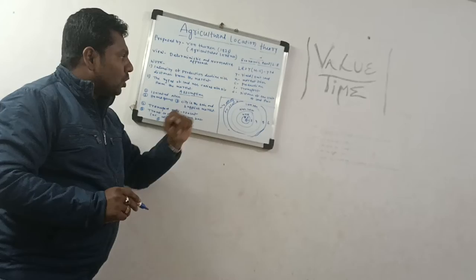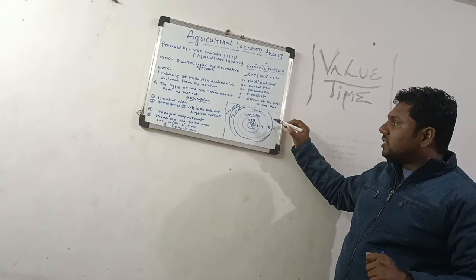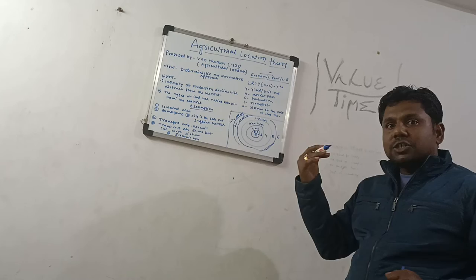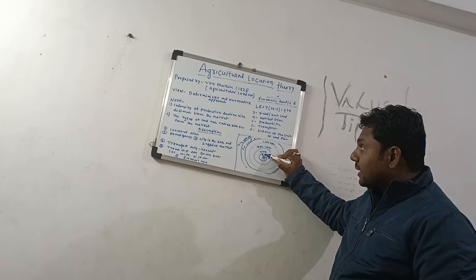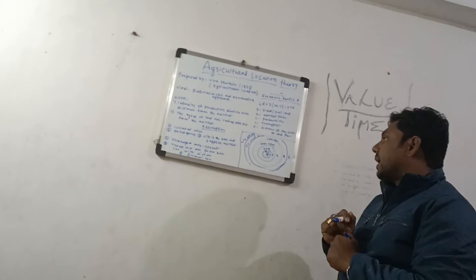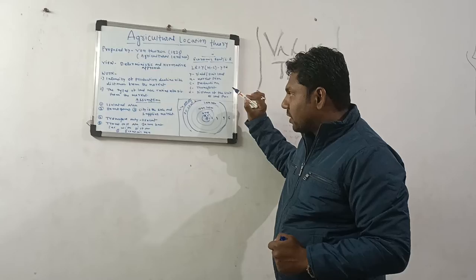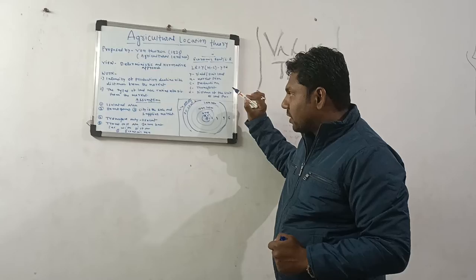Now let's talk about the zones. Zone one is the market area — here fresh fruits and vegetables are grown, which are perishable and must reach the market fast, so transport distance is minimal. Zone two is fruit and vegetable production. Zone three is woodland, where fuel wood is produced.